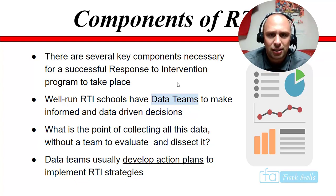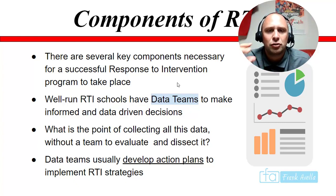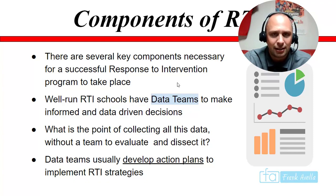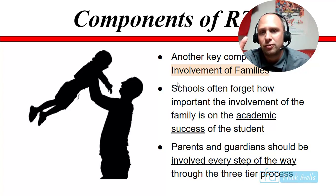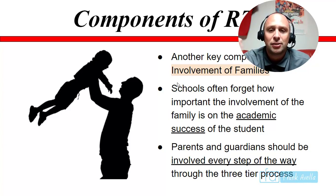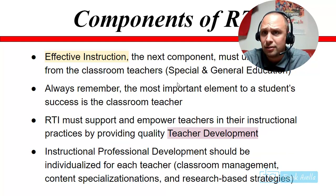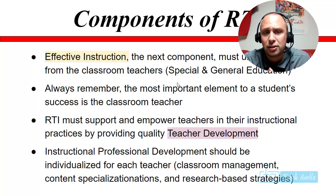Several key components are necessary for successful RTI. You need data teams to make informed, data-driven decisions — to collect data and implement the plan. The team evaluates the data and develops action plans and strategies. The involvement of family is also key — schools often forget how important family is to a student's academic success, and parents and guardians should be involved every step of the way. Effective instruction at tier one is so important; we can't focus too much on assessment and grades and forget about instruction.